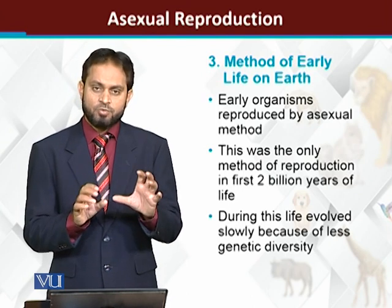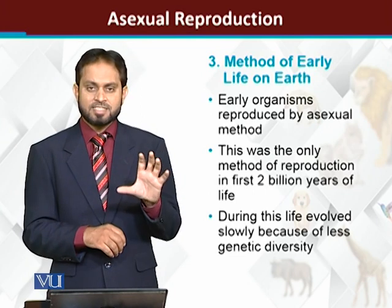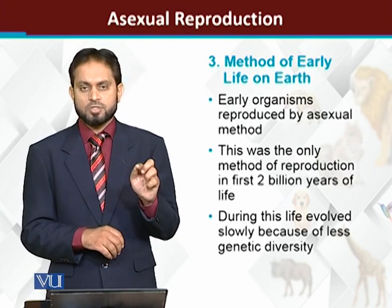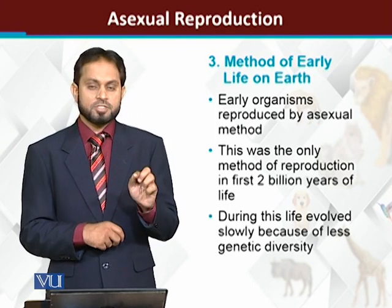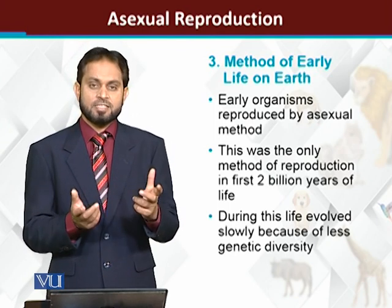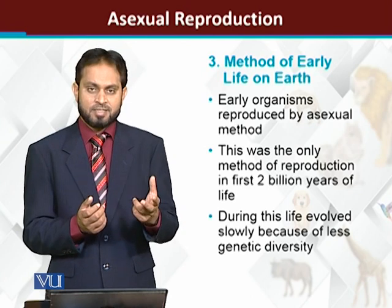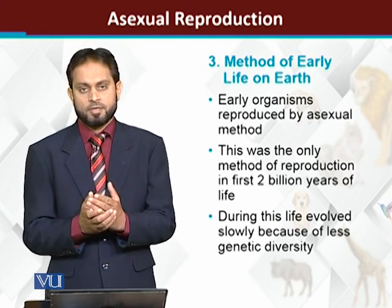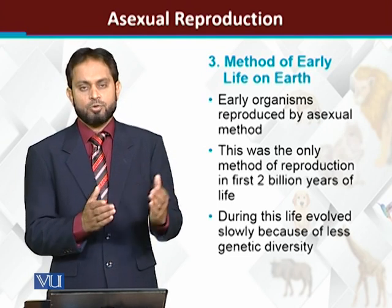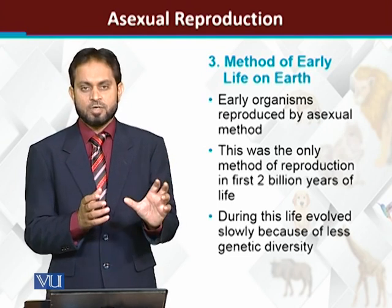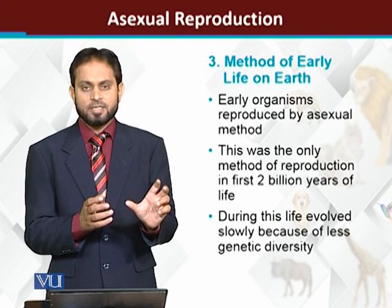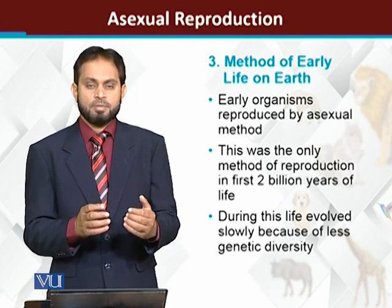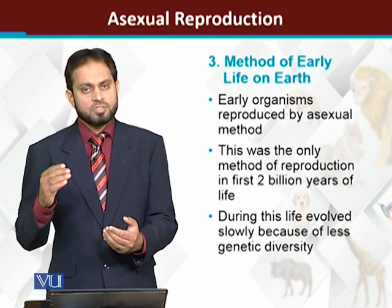If we look at the evolution of life, during the first two billion years, because only asexual reproduction was occurring, diversity was low and genetic variability was low. When genetic variability is low, the process of evolution is also slow. So the evolutionary process of life during the first two billion years was very slow. When sexual reproduction appeared, the evolutionary process became fast.